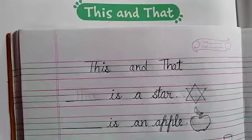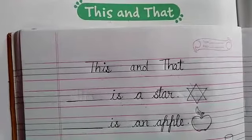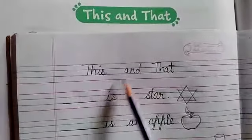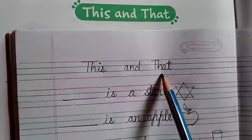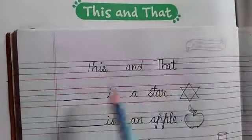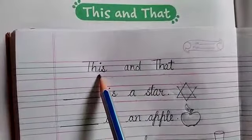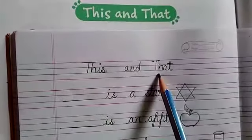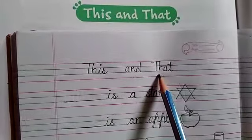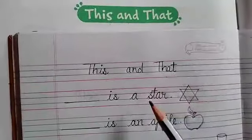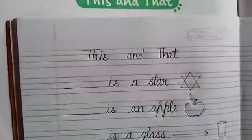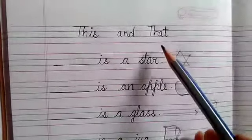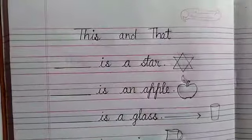Hello dear children, in our previous class we have done the chapter this and that. As I have already told you, we use this when the object is near to us and we use that when the object is far. So we will do some more exercises related with this and that. So let's do.